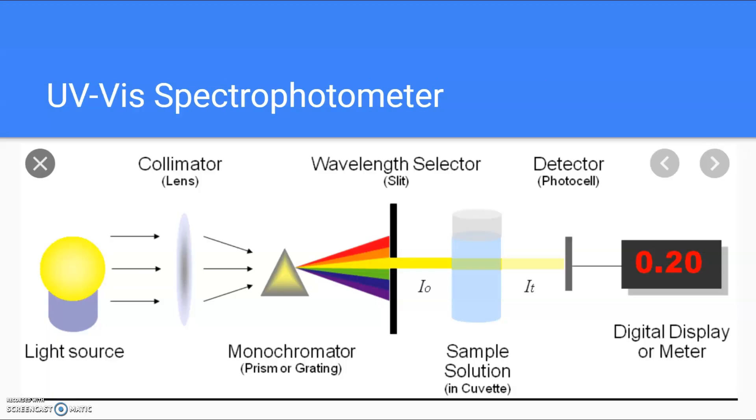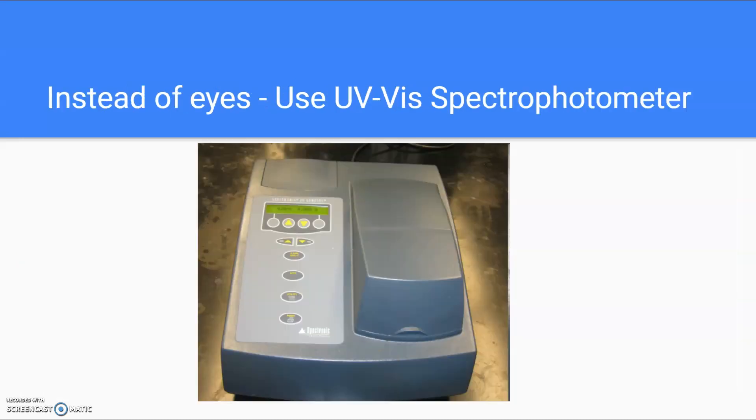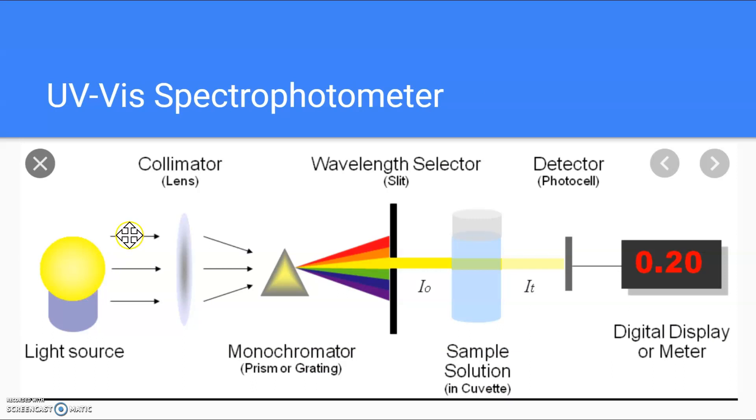So let's look at a schematic of what the instrument actually does. So inside that UV visible spectrophotometer, there is a source of light. Then there is a lens and a prism that will separate the light into the individual colors of the rainbow. Then we're going to select the color that our solution absorbs. So we're not going to select yellow. We're going to select red, and it will shine red light through our sample. Some of the red light will be absorbed by the sample, so less of it will hit the detector.